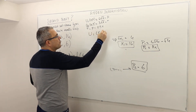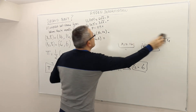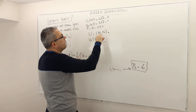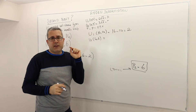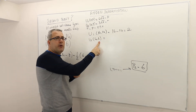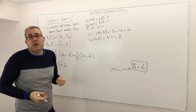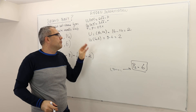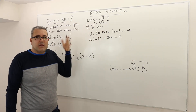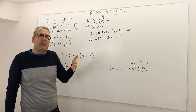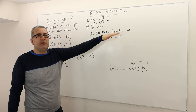We can verify this. For a type 1 customer: U1(16, 14) equals 4√16 minus 14 equals 16 minus 14 equals 2. And U1(4, 6) equals 4√4 minus 6 equals 8 minus 6 equals 2 as well. So buying his own package is no worse than buying package 2 — this is expected since the IC1 constraint is binding. And the utility of 2 is greater than 0, so buying is better than not buying.